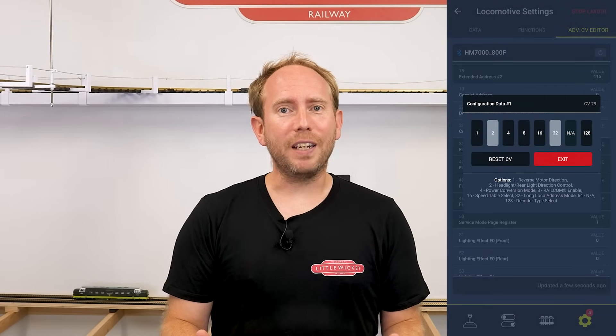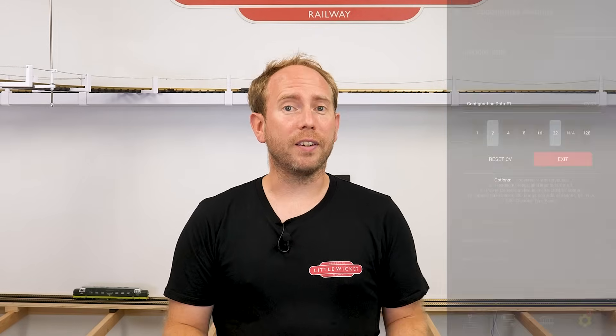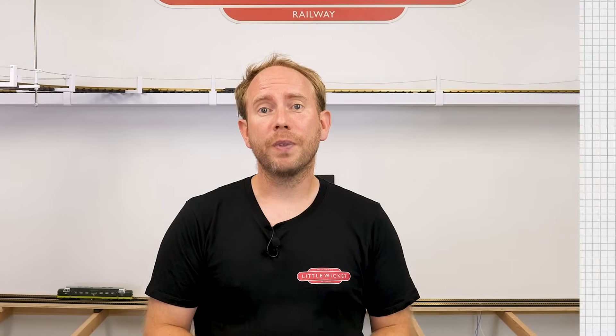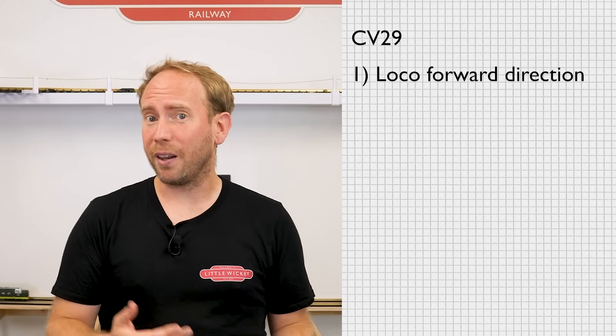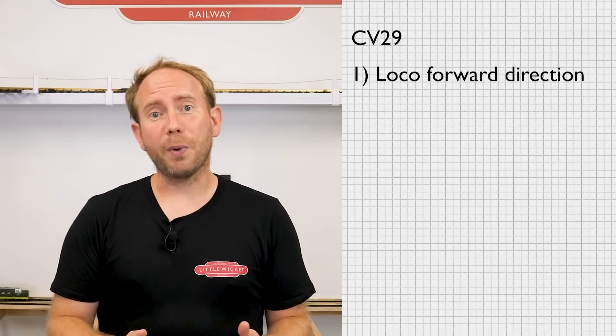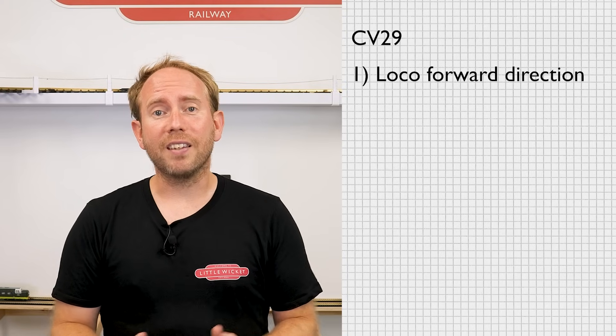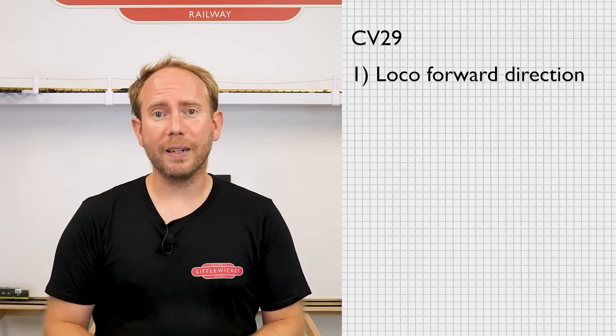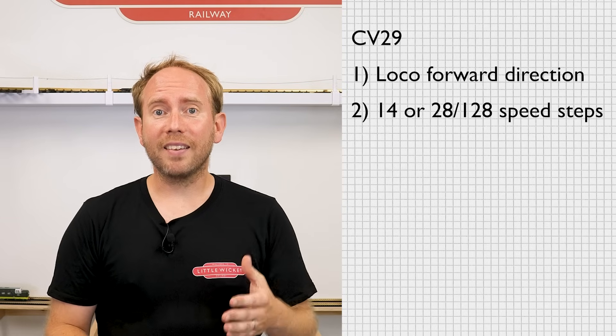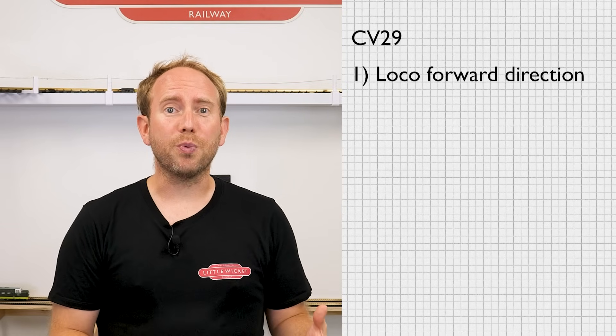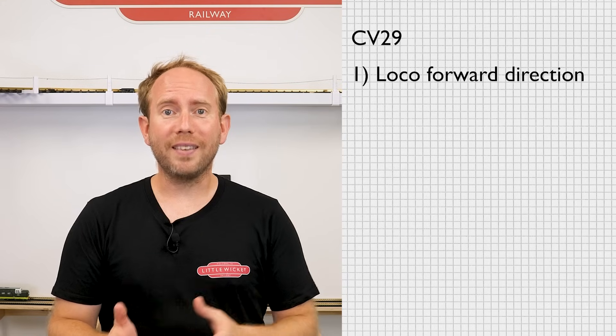Back to CV29 — why is this the CV I've decided to make a video about? Well, most CVs only control one specific thing, whereas CV29 is a more general setup and controls six different things. You can change the default forward direction of the loco — so if you select forward on your controller but the loco moves backwards, you don't need to open up the model and swap any wires around; you can fix this using CV29.